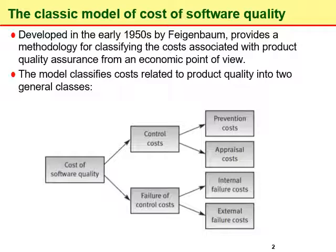Prevention costs are a subcategory of control costs. They include investments in quality infrastructure and quality activities that are not directed to a specific project, being general to the organization. Appraisal costs include the cost of activities performed for a specific project or software system for the purpose of detecting software errors. Internal failure costs include the cost of correcting errors detected by quality assurance activities.